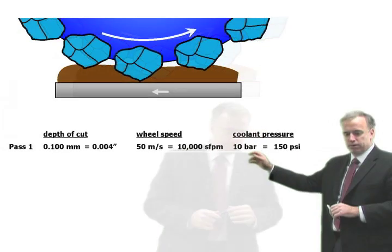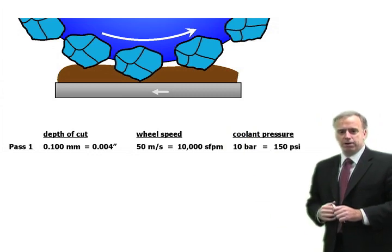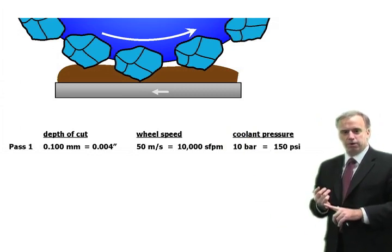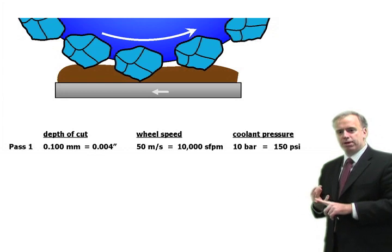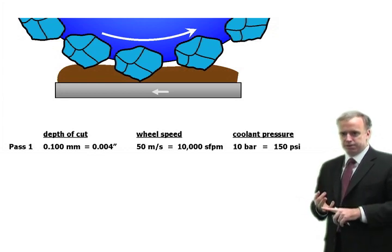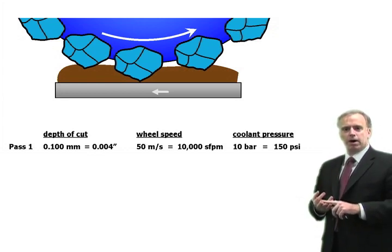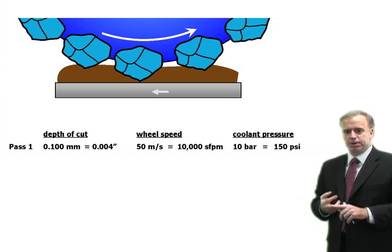So let's take an example. Let's say your normal depth of cut is 0.1mm or 4 thou. You've got a wheel speed of 50 meters per second or 10,000 surface feet a minute, and you've got good cooling velocity and good pressure—you've got 10 bar of pressure.